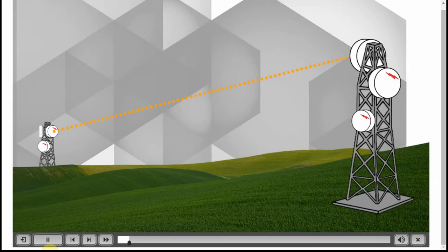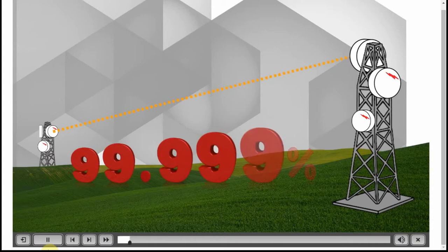For example, the industry standard is five nines where the path is reliable 99.999% of the time on an annual basis.